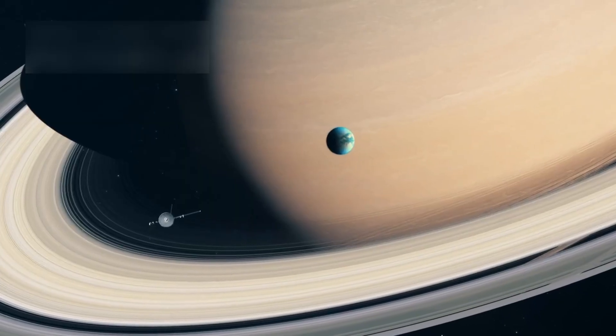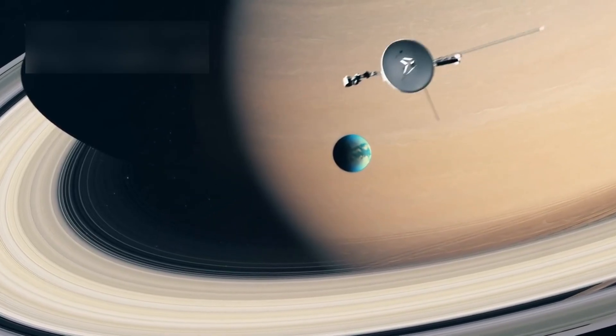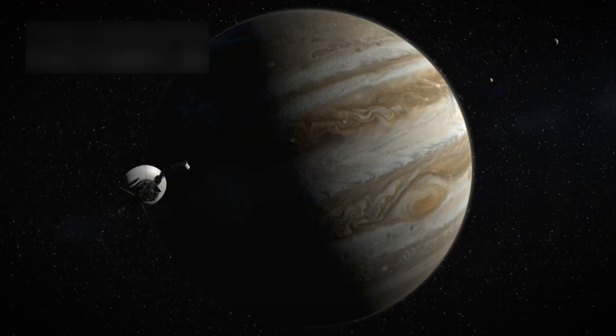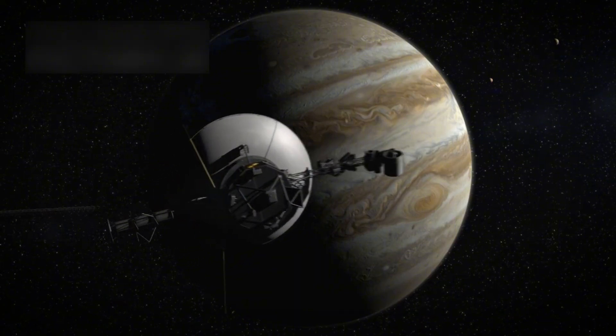The spacecraft, along with its twin Voyager 2, was designed to explore Jupiter and Saturn, two of the gas giants that dominate our solar system. The mission was meant to last just five years, but what happened next amazed even the most optimistic scientists.